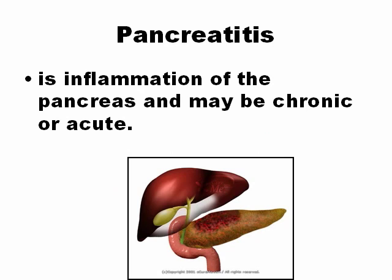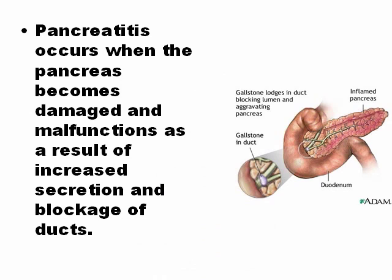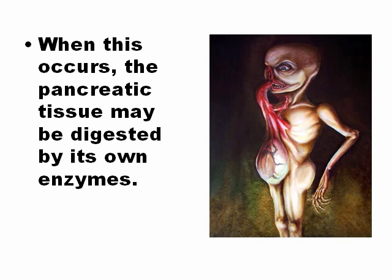Pancreatitis is a very important and dangerous disease. It is the inflammation of the pancreas and may be chronic or acute. Chronic pancreatitis develops after acute pancreatitis. Pancreatitis occurs because the normal enzymes that the pancreas produces to help digestion of food activate inside the pancreas, and the pancreas digests itself, producing a very painful and dangerous disease called acute pancreatitis.